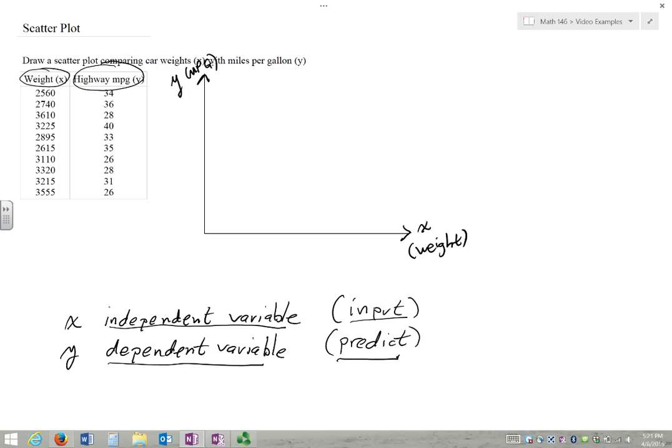So let's put the scale on the weight axis, no pun intended. We have about 2500 to 3600 roughly, a little over 3600. So what I'm going to do, I'm going to just kind of insert a little squiggle here.